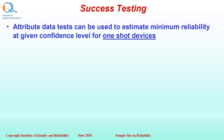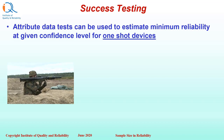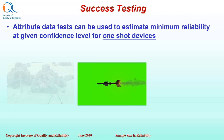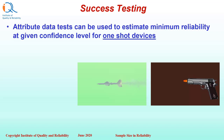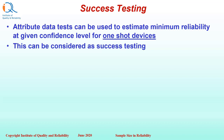The first option to determine the sample size in reliability testing is using the success run theorem, sometimes called success testing. Attribute data tests can be used to estimate minimum reliability at a given confidence level for one-shot devices, such as missiles, firing of guns, or other one-shot devices.